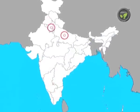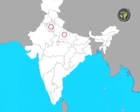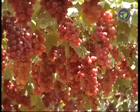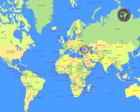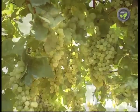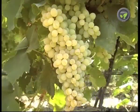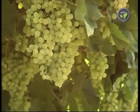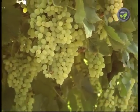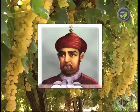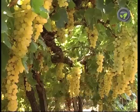Uttar Pradesh and Haryana do have some area under grape cultivation. Grape originates from the Black Sea region below Russia. Available documents say that this fruit was introduced to India in 1300 AD. Mohammed bin Tughlaq brought this crop to South India in the 14th century.